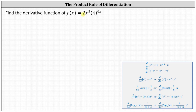For the given function f of x, we'll let u equal two x to the fifth and v equal four to the power of six x. Notice that to differentiate four to the power of six x, we will have to apply the chain rule because the exponent is not just x — it is six x.